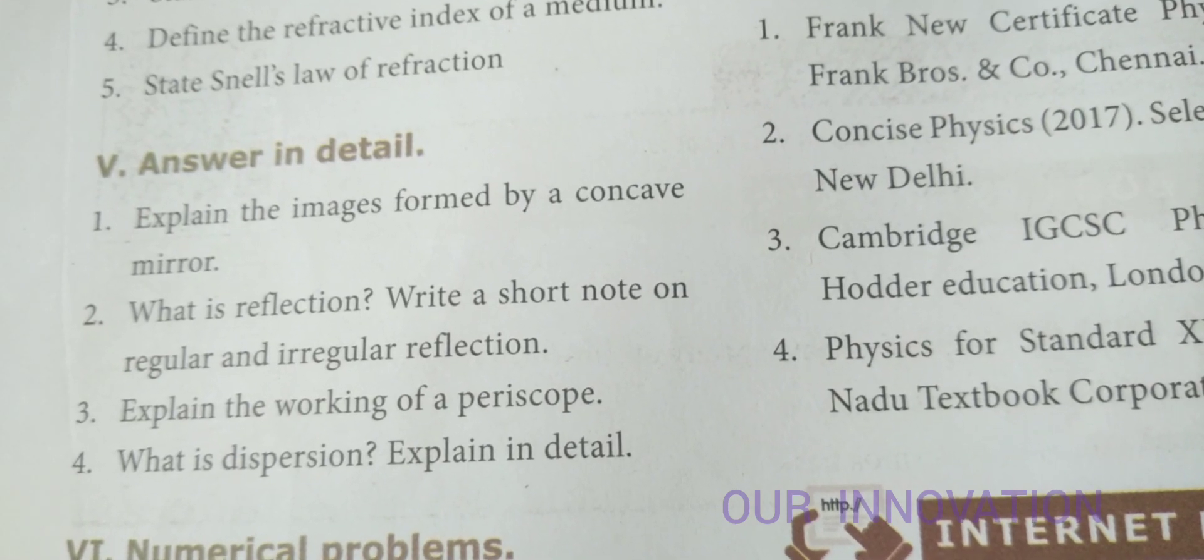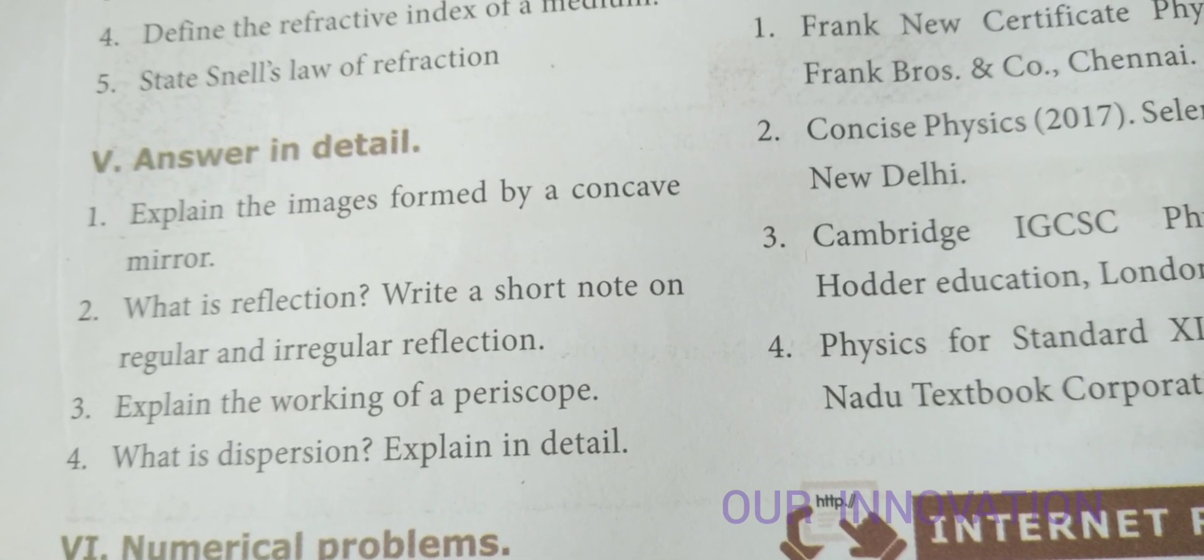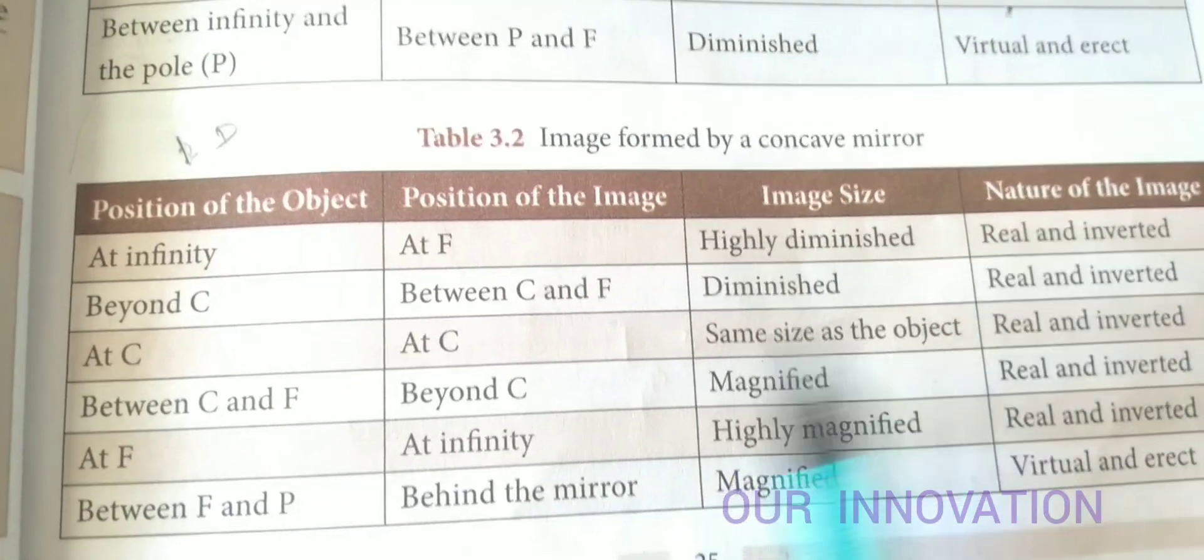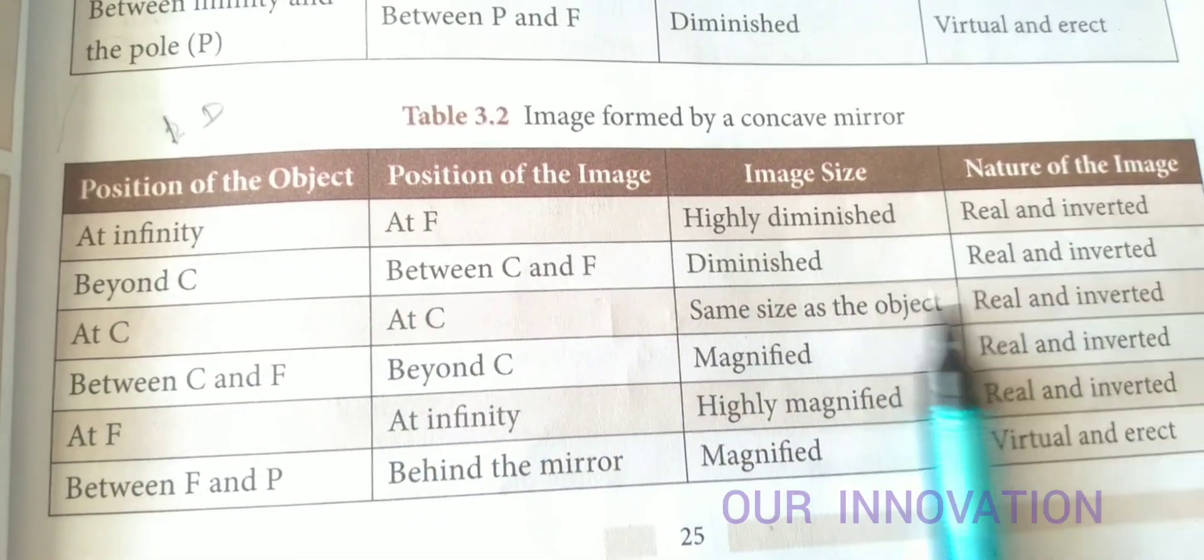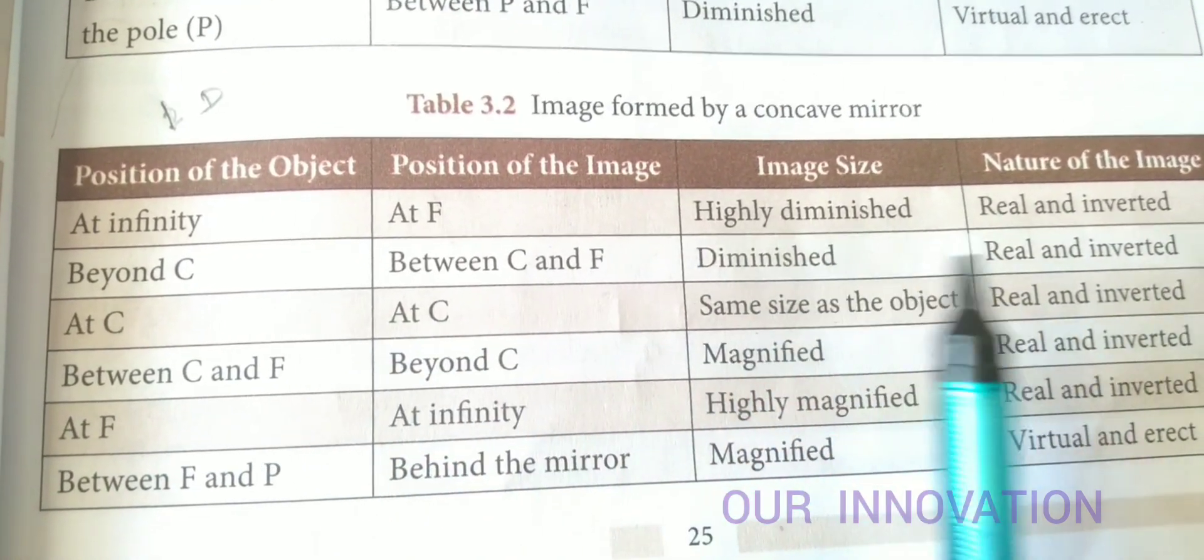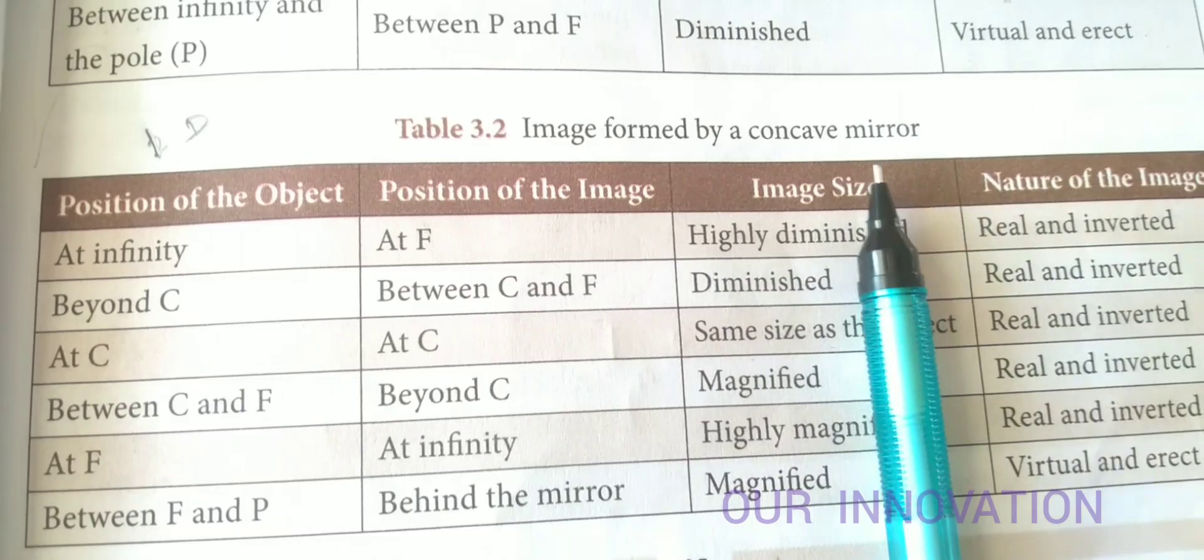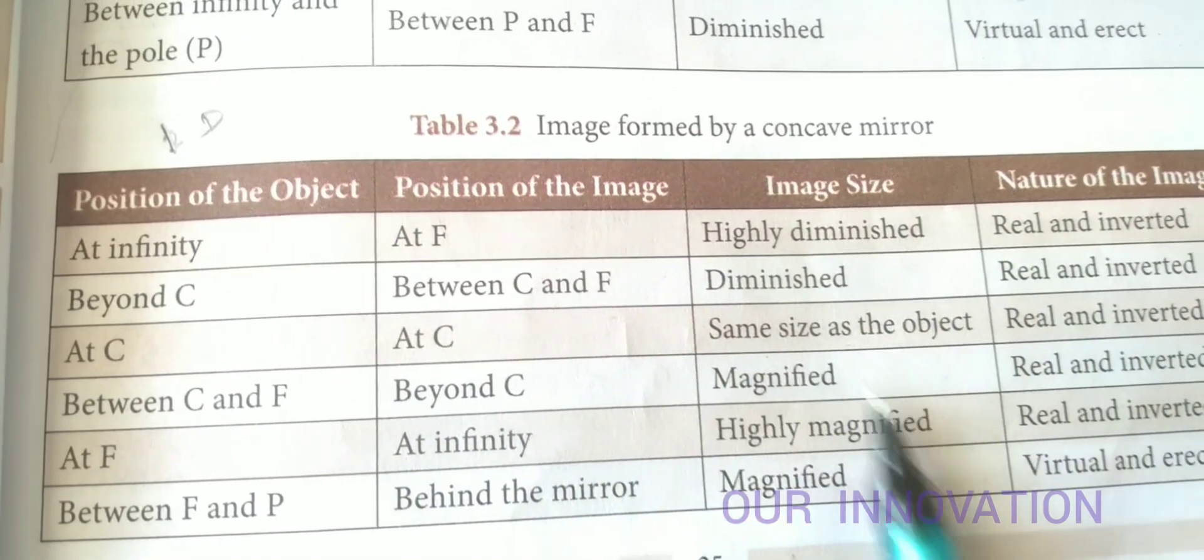Roman letter 5, answer in detail: Explain the images formed by the concave mirror. Page number 25. Here the tabular column is given, so in tabular column form, images formed by a concave mirror. This is the first detail.